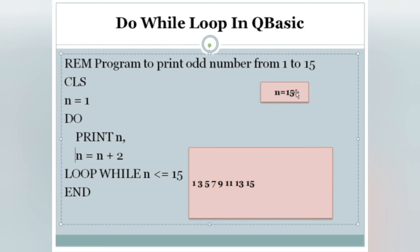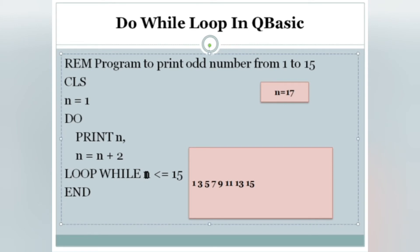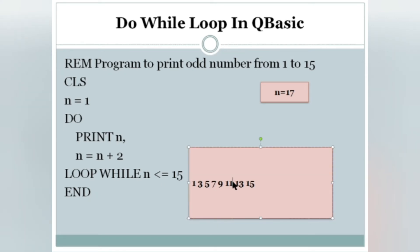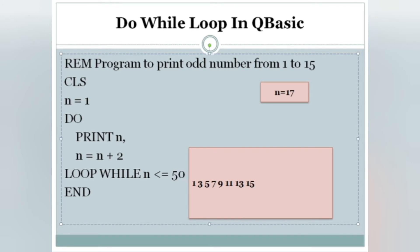The program is still not finished — N equals N plus 2 means 15 plus 2 is 17. It checks the condition: N is 17; 17 <= 15 is false, because 17 is greater than 15. When the condition is false, it does not go back to DO — it goes to the next line, which is END, and that is the end of the program. This is the dry run. If you want to print odd numbers from 1 to 50 or 1 to 100, just change that value.